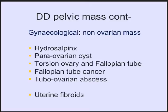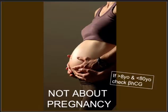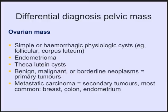Uterine fibroids, especially the subserous ones, could present as a pelvic mass with local pressure. Let me make clear: this lecture is not about pregnancy, because if you're a little cynical you could argue that a pregnancy is initially also a growing pelvic mass. But it is important in clinical practice to always think about pregnancy, including ectopic pregnancy. I tell my students: if a woman is more than 8 years of age and younger than 80, it's worthwhile to check the serum beta-hCG level.